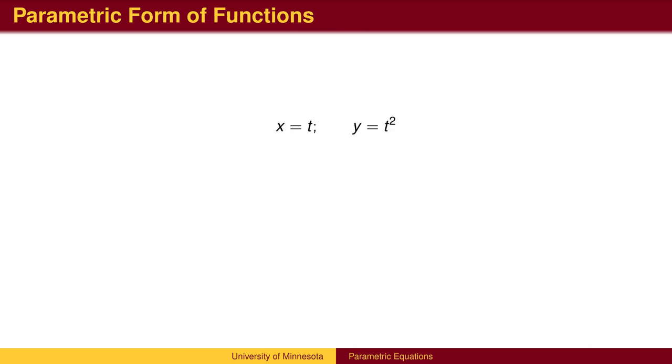Given a function, there is an easy way to write the parametric equation. Simply let x equal t so the graph is traced from left to right at constant speed. Substituting x for t in the y equation gives the equation of the standard parabola.